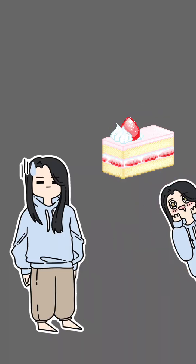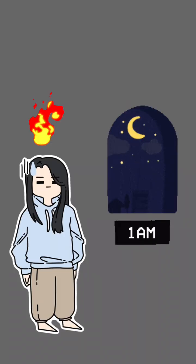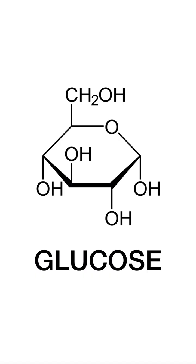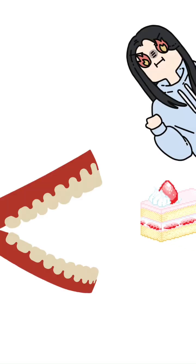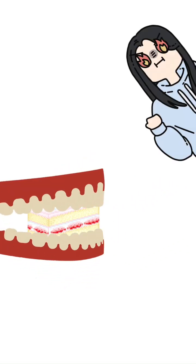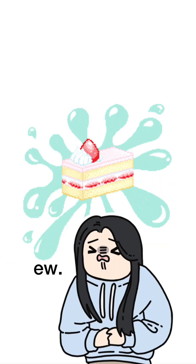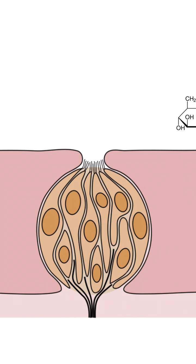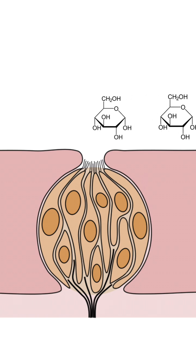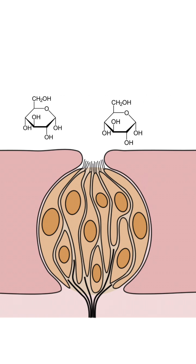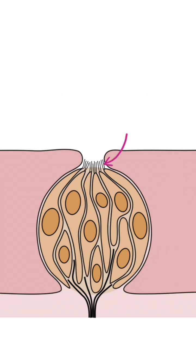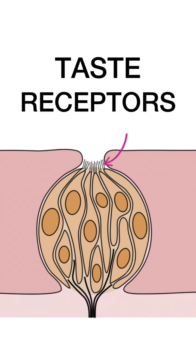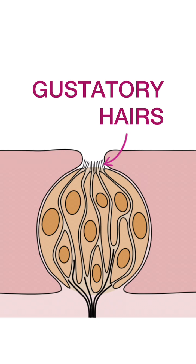So let's say you're eating some cake. It's late at night. You're stressed, depressed, and hungry. Glucose, or another sweet chemical in the cake, is mushed and mixed by your teeth and saliva, liquefying the cake. This allows the glucose molecules to easily pass over a taste pore, stimulating taste receptors called gustatory hairs.